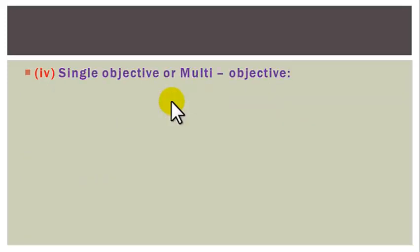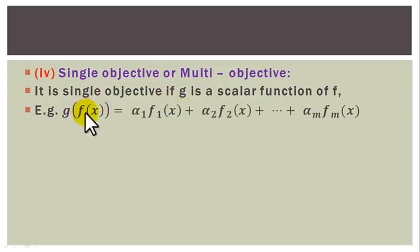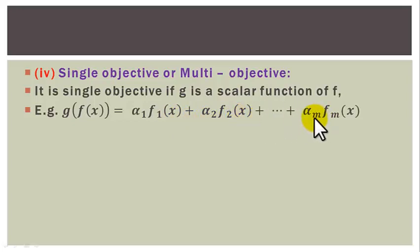Four: we also classify the optimization problem as single-objective or multi-objective. It is single-objective if g is a scalar function of f. For example, g of f of x equals alpha_1 f_1(x) plus alpha_2 f_2(x) plus ... plus alpha_m f_m(x), where alpha_1, alpha_2, ..., alpha_m are scalars.